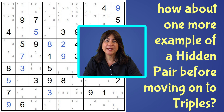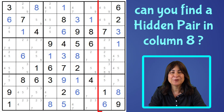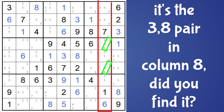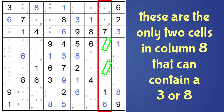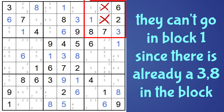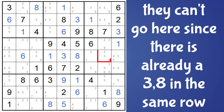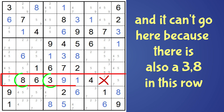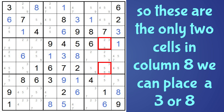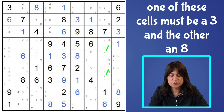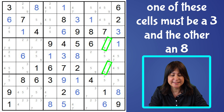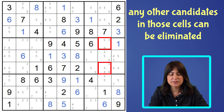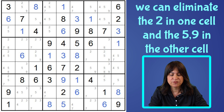How about one more example of a hidden pair before we move on to triples? Can you find a hidden pair in column eight? Pause the video and see if you can find it. It's the three-eight pair in column eight. There's no other cell in column eight that can have a three or an eight — only these two cells. They can't go in block one because there is already a three and an eight in the block, and they can't go here because there's already a three and an eight in the same row. So the only place a three-eight can go is in these two cells, meaning one cell has to be a three and the other has to be an eight. So any other possible candidates in those cells can be eliminated — the two here and the five-nine here.